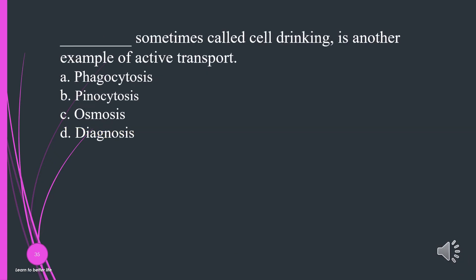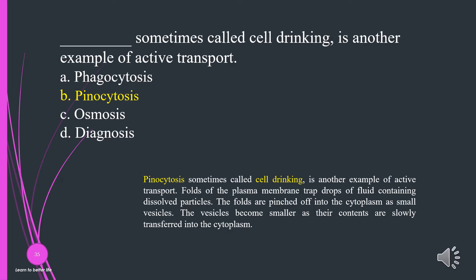What, sometimes called cell drinking, is another example of active transport? A. Phagocytosis. B. Pinocytosis. C. Osmosis. D. Diagnosis. The answer is B, pinocytosis.